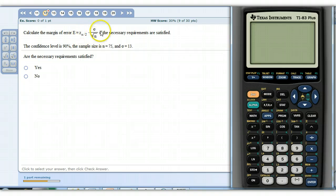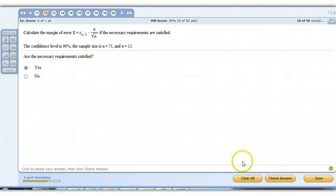So everything that's unknown - this, this, and this - we're given enough information to find them. So the necessary requirements are satisfied. Now it wants us to find it.